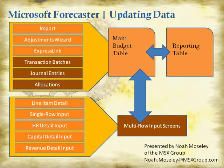Express link will let you hook up to your general ledger directly through FRX, and this will let you import account IDs, descriptions, and your other segment IDs and descriptions, as well as the account balances. For express link, you have to be using Microsoft FRX as well.